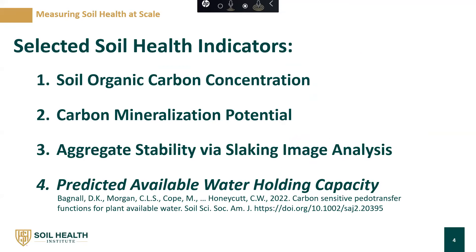This left us with three measurements that represent four different indicators. These are: number one, soil organic carbon concentration; the second, carbon mineralization potential; the third, aggregate stability via slaking image analysis; and the fourth, predicted available water holding capacity. Today I'm going to go through the methods behind the first three indicators. If you're interested in our predicted available water holding capacity pedotransfer function, I invite you to look at Bagnall et al. 2022 or hop on over to our website.